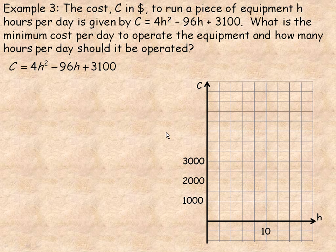Last example on page 4. We're told the cost, and c represents cost in dollars, to run a piece of equipment h hours per day, is given by this formula: c equals 4h squared minus 96h plus 3100. And we're asked what's the minimum cost per day to operate the equipment.